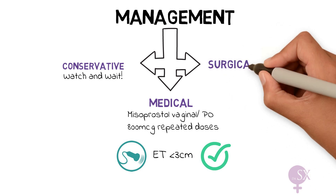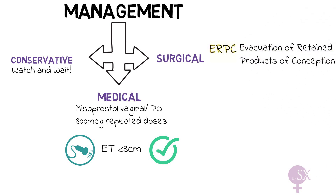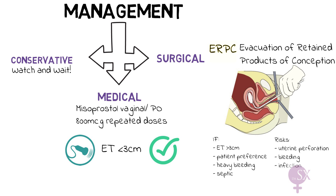The surgical option involves an ERPC — evacuation of retained products of conception. This is a minor procedure carried out under general anesthetic, involving removal of the POCs using suction. It is carried out when there is failed medical management, so the endometrial thickness on ultrasound is more than 3 cm, or because of patient preference, heavy bleeding, or a septic miscarriage. Risks of this procedure include uterine perforation, as the uterus is more fragile during pregnancy, as well as infection and bleeding.